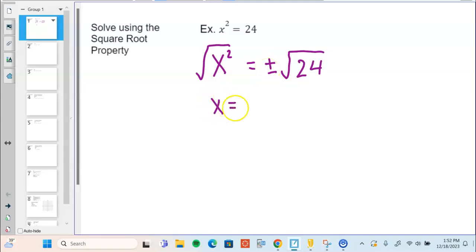So, we have x equals plus or minus square root of 24. Remember, that's two solutions. That's the negative square root of 24 and the positive square root of 24.